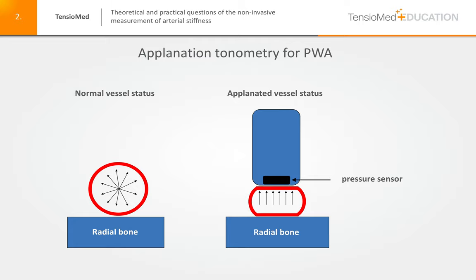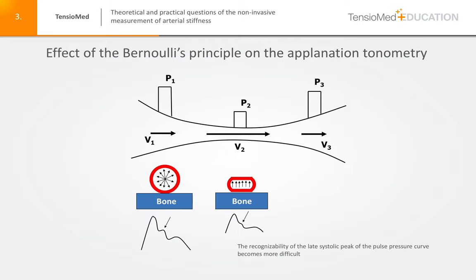Doing so, the Bernoulli effect will occur, because if we reduce the diameter of a tube, the speed of the flow will increase and proportionally the pressure will drop. The consequence of this phenomenon is that the recognizability of the late systolic wave becomes difficult.